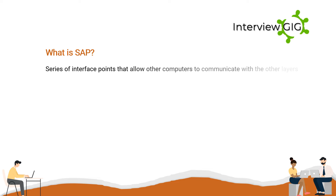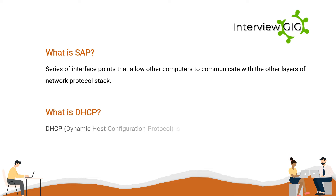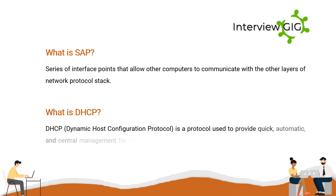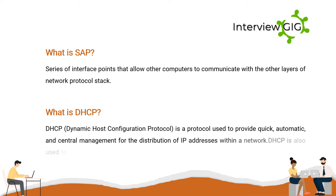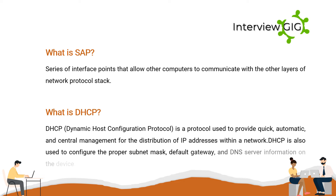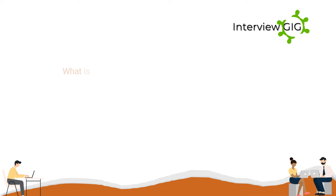What is SAP? SAP is a series of interface points that allow other computers to communicate with the other layers of a network protocol stack. What is DHCP? DHCP, Dynamic Host Configuration Protocol, is a protocol used to provide quick, automatic, and central management for the distribution of IP addresses within a network. DHCP is also used to configure the proper subnet mask, default gateway, and DNS server information on the device.